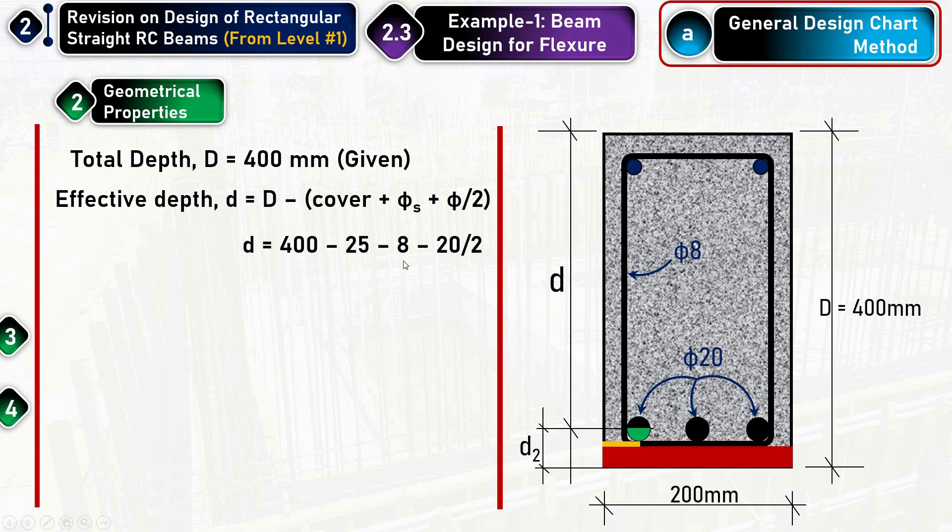...minus the diameter of the stirrup minus half of the main bar diameter. So we get the final d effective, or the effective depth, equals 357mm. That is the distance from the compression fiber, maximum top compression fiber, up to the centroid of the reinforcement.